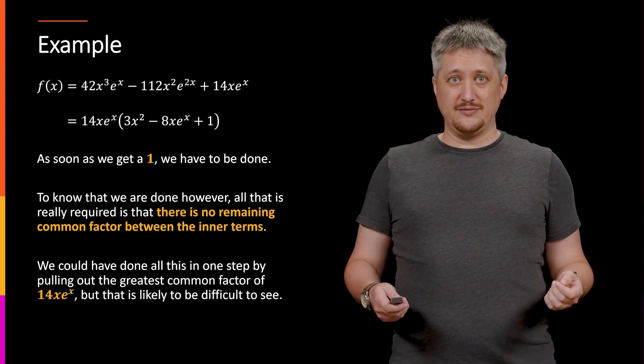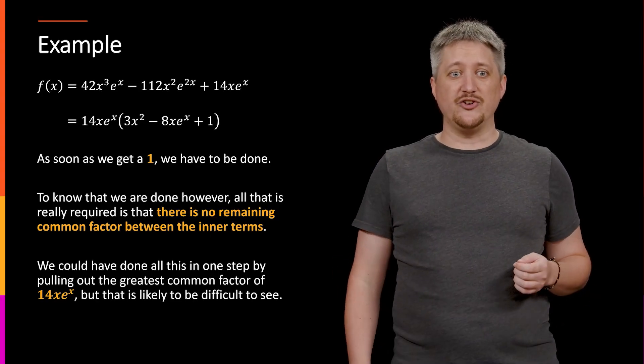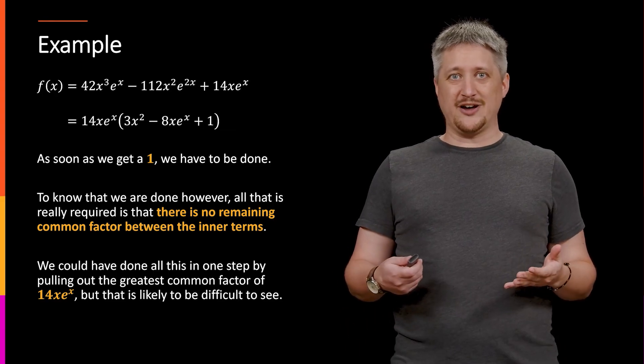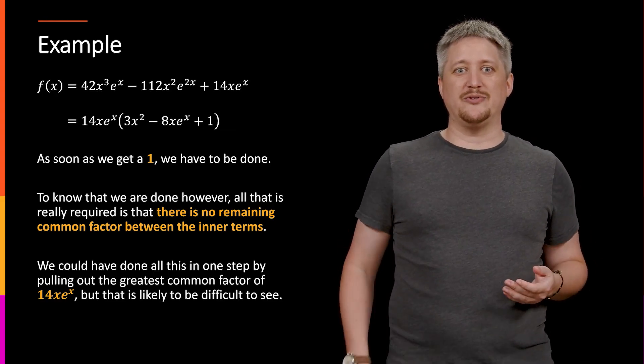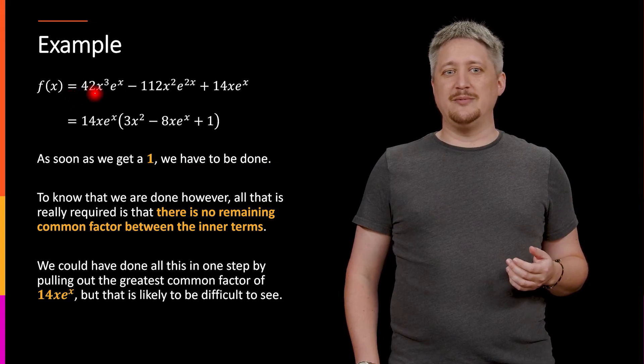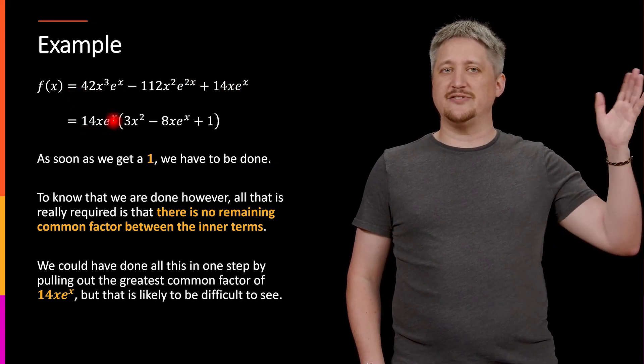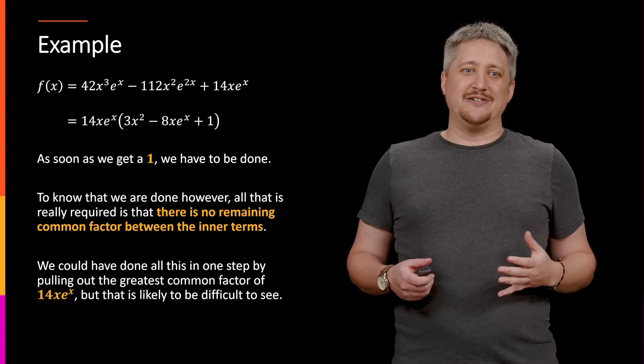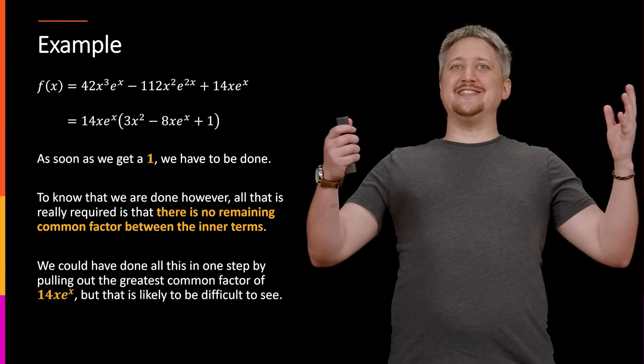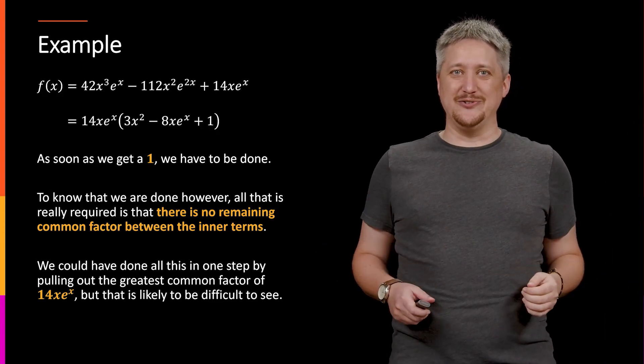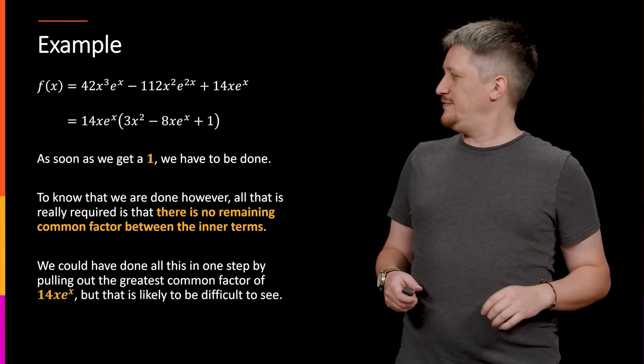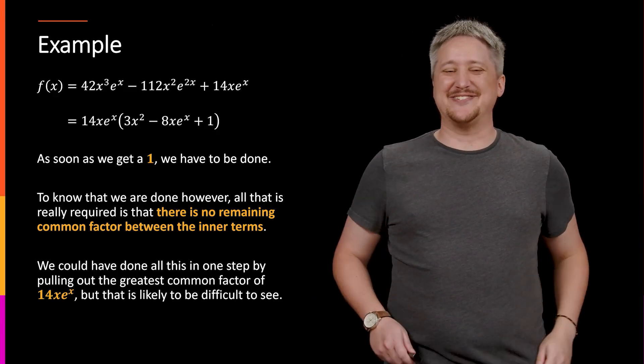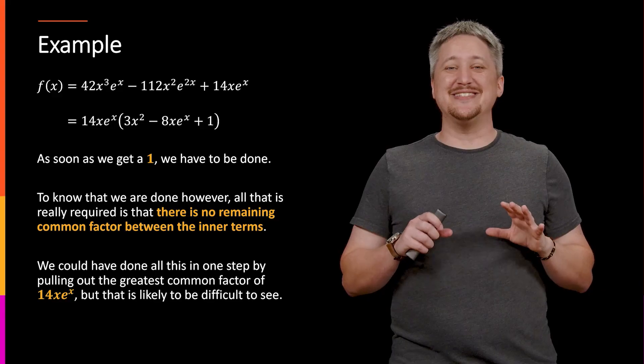Now I could have done all of this in one go by just pulling out 14xe^x. And a lot of the times when this is taught that's exactly what they do: they go through and they're like okay what's the greatest common divisor between these three terms and then oh obviously it's 14xe^x and they pull that out. And to my experience a lot of the times it's obviously 14xe^x and all the students are like, obviously, did anyone else think that was obvious? Not so much.